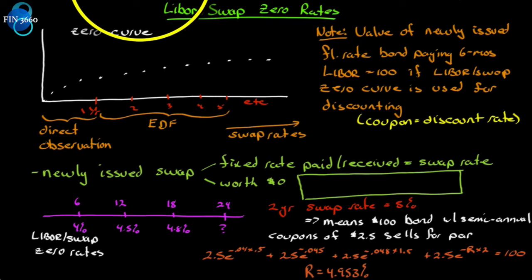We've looked at the treasury zero curve in an earlier chapter and figured out how to extend that by using a set of zero coupon bonds for three, six, nine, and twelve month maturities and then using coupon bonds past that. We can also use the swap rates to extend the zero curve, the LIBOR zero curve or swap zero curve, or as the book calls it, the LIBOR slash swap zero curve.